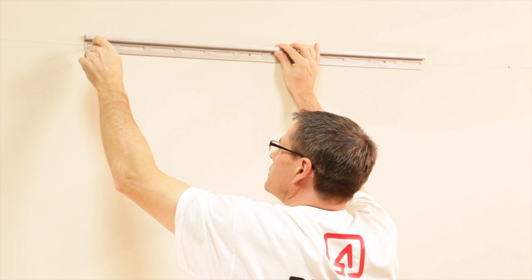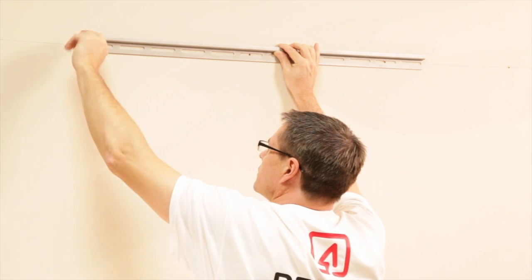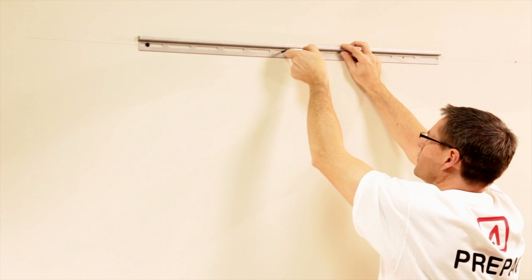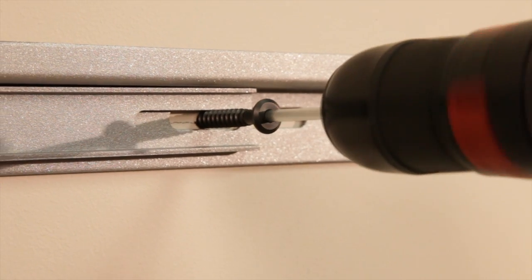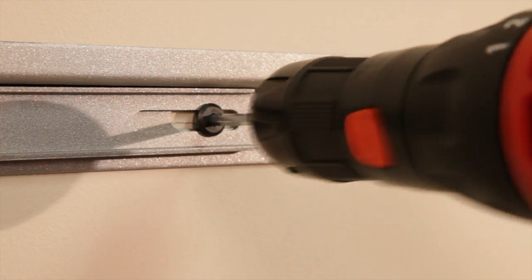Position the metal track over the pre-drilled holes and insert wood screws into the first and second holes, with the Allen key provided. For faster installation, use a drill and the supplied hexagonal bit.